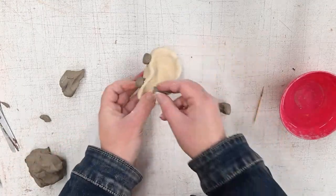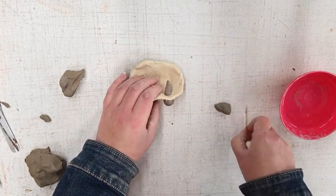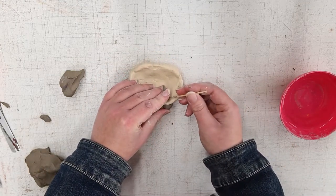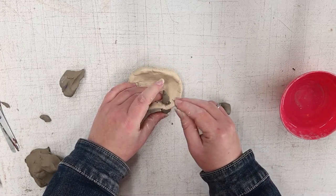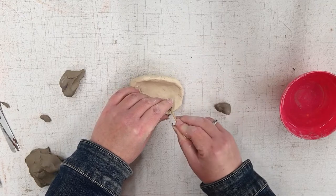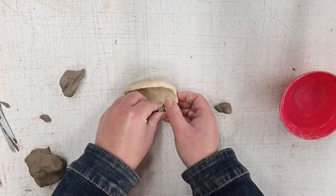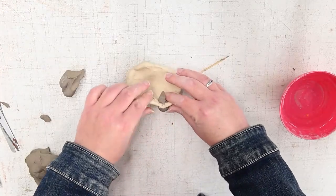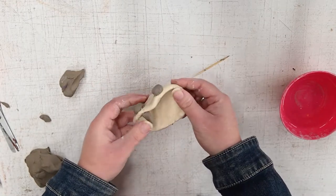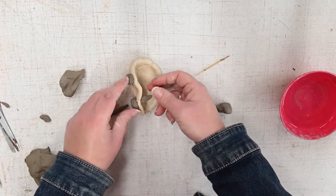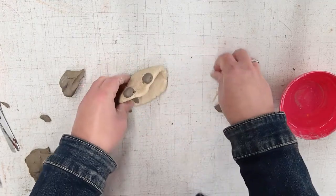Then we're going to attach our fangs the same way that we attached our eyes. So again, creating texture on both pieces and then pushing the clay together to make sure it holds. It's very important that you make sure all your pieces are secured before it dries. Because once the clay dries, you won't be able to stick it back on unless you use glue.